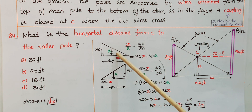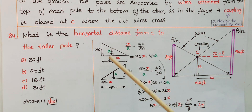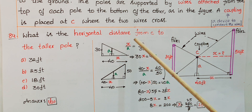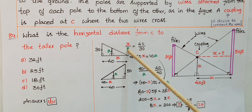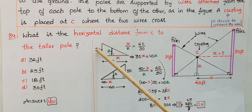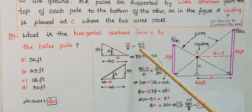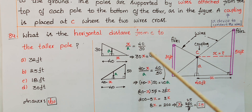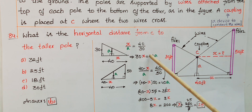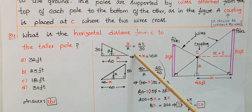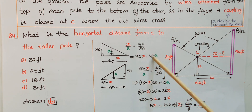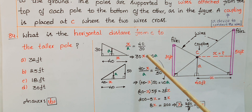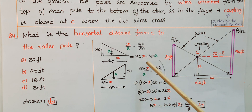Since these two triangles are similar, their corresponding side ratios are equal: x/a = 40/30. Cross-multiplying gives 30x = 40a. However, this equation has two variables, so we cannot find the value yet and need a second equation.